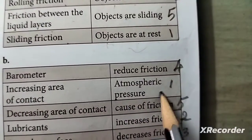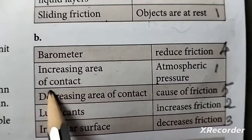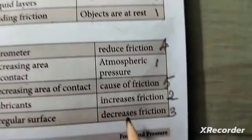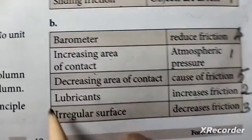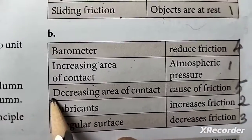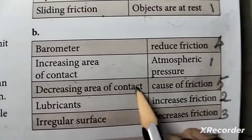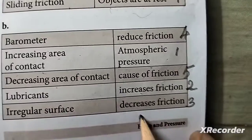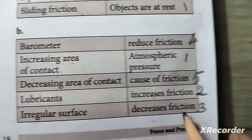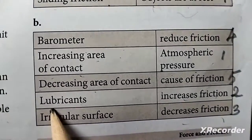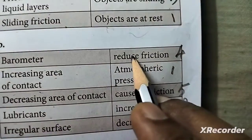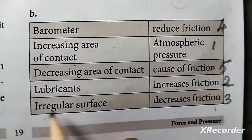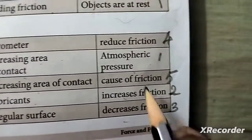Barometer — atmospheric pressure. Increasing area of contact — increased friction. Decreasing area of contact — decreased friction. Lubricants — reduced friction.